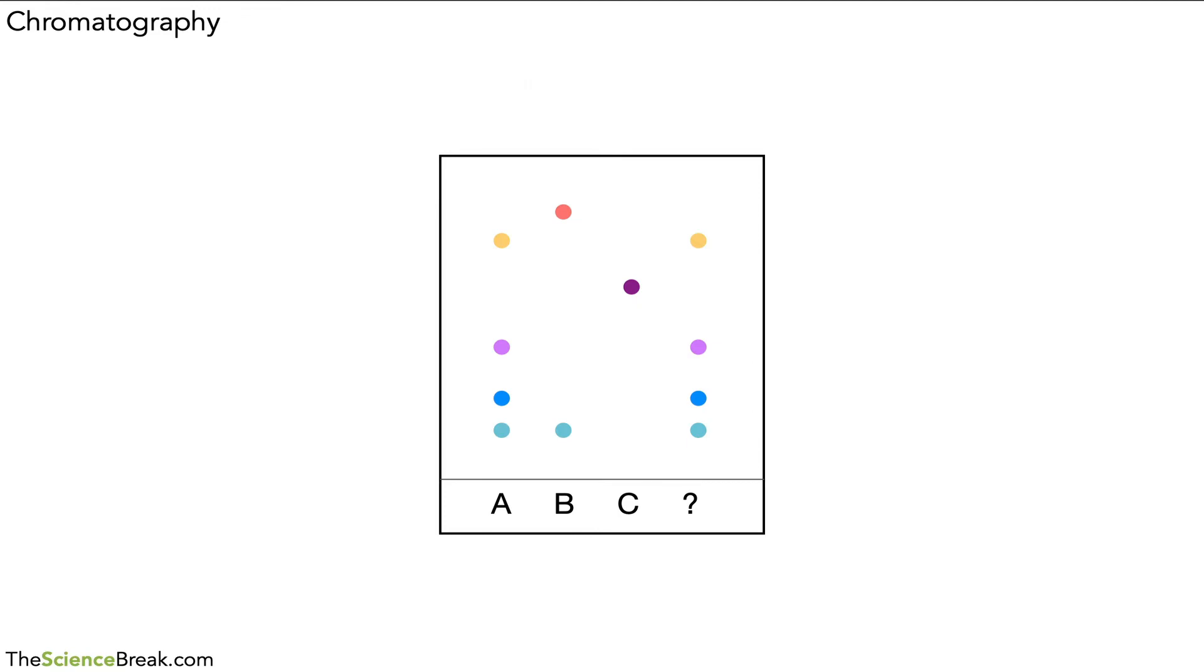We can work out various things from this. Firstly, A is a mixture of four pigments because you can see four separate spots there. B has two pigments because of two spots, and one is the same as that found in A—that's the bottom one there because it's moved the same distance. In terms of C, we've only got one pigment.